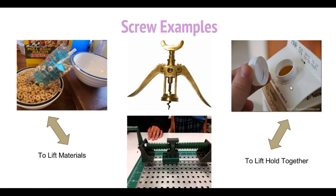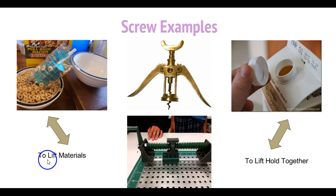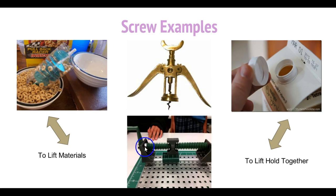Over here, we're familiar with cartons — this looks like milk or orange juice — and this lid screws on to hold it together. So this is an example of a screw used to lift materials, while over here we have an example of a screw used to hold materials together. And then this is what a screw would look like in a robotic mechanism, where it could be used for various tasks — to lift materials or to hold a material together.